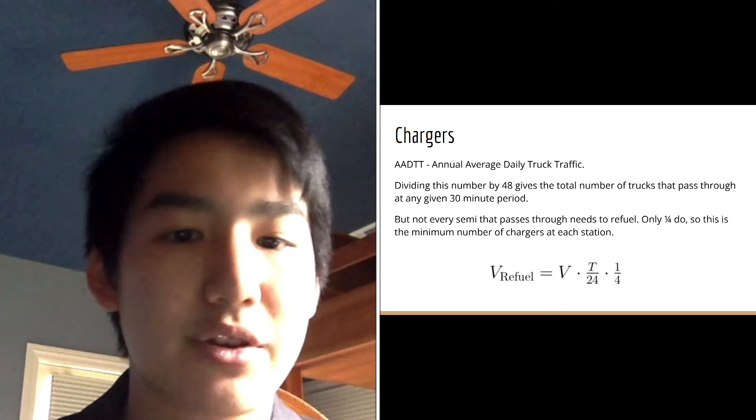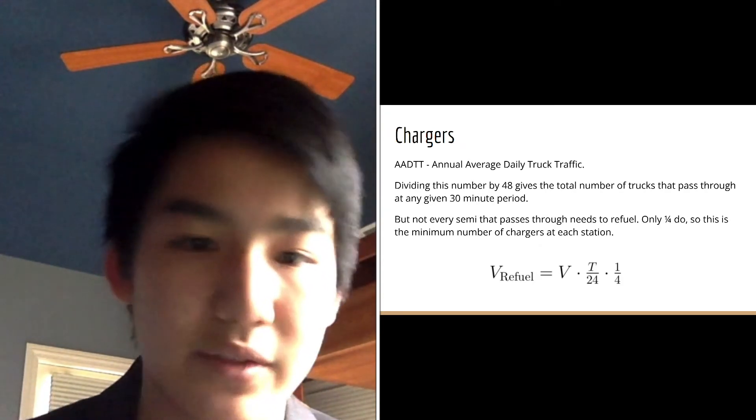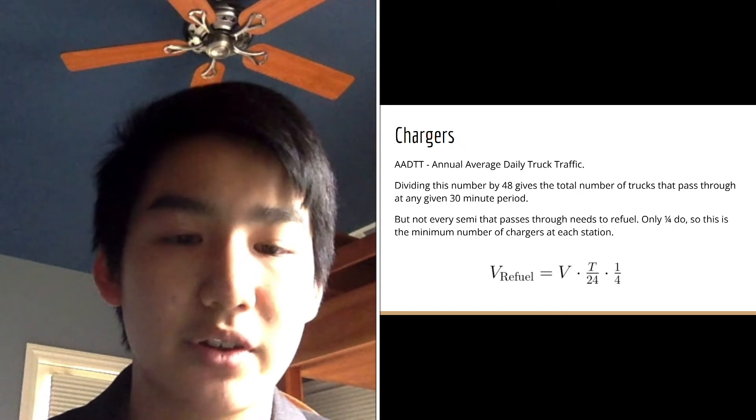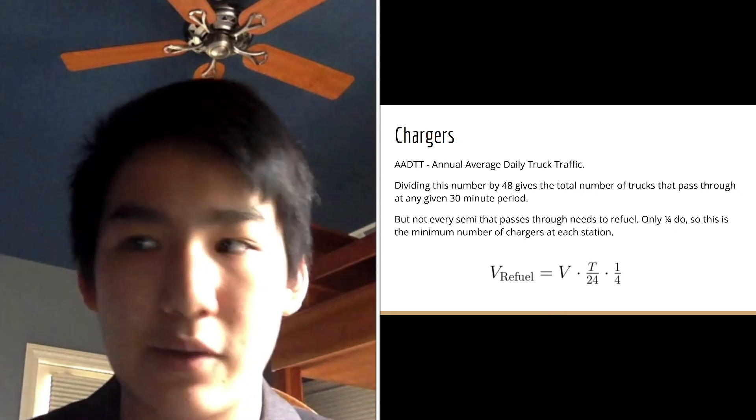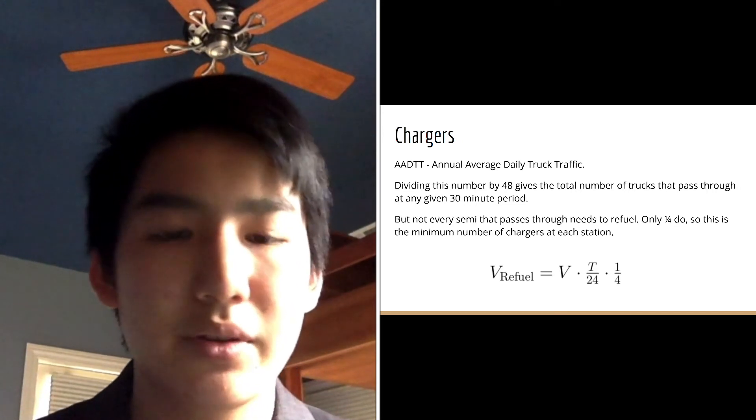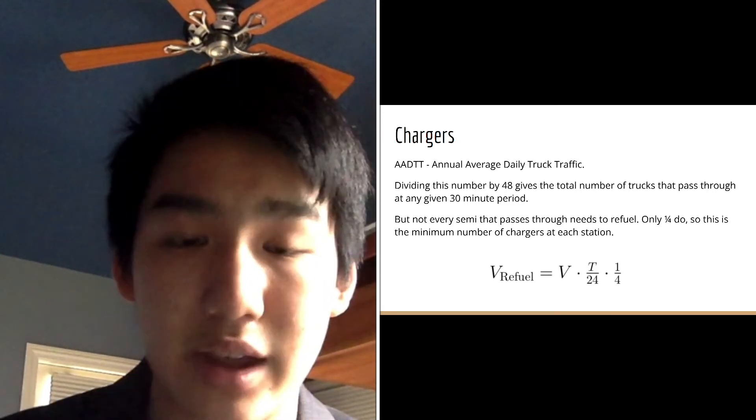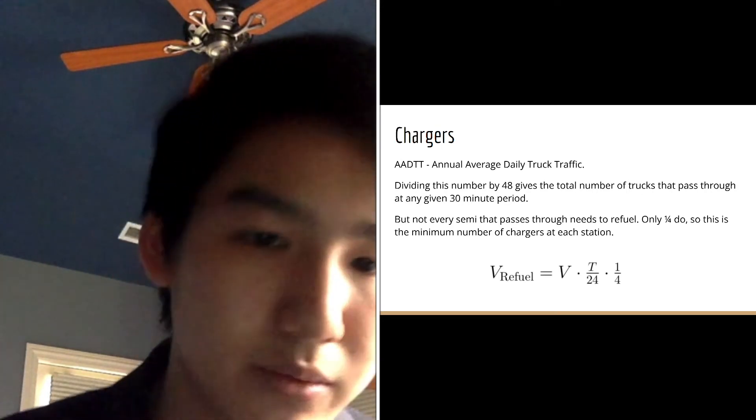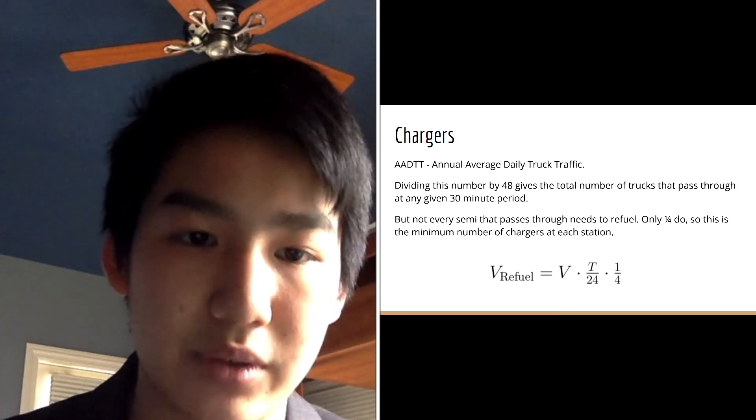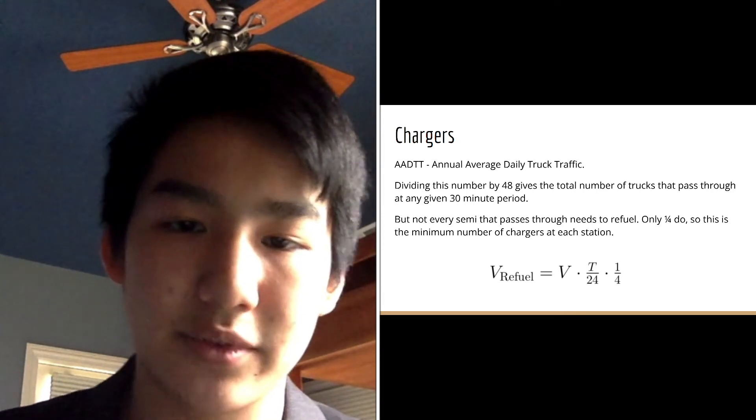From the average charging time, 30 minutes, we can next see how many trucks will actually pass through any given exit ramp. This will help us figure out the total number of traffic that will pass through any sort of charging station. However, by using this value, which is yielded by taking the annual average daily truck traffic times 1 over 48 to figure out how many trucks pass through every 30 minutes, we only yield the total number of trucks, and not every single truck will need to be refueling at that time.